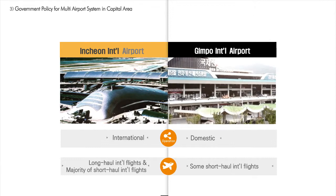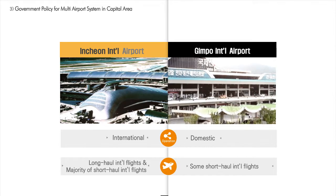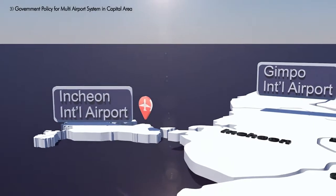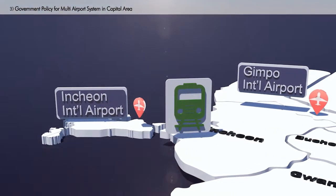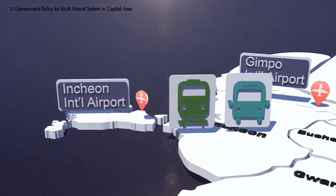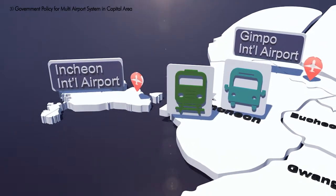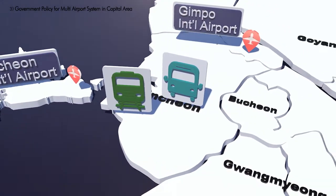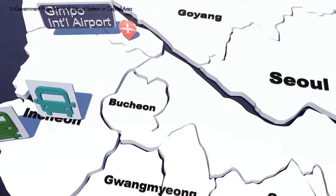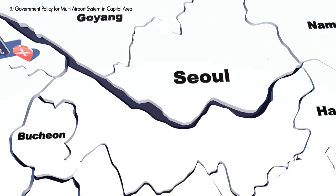Locating domestic and international flights in different airports may raise questions on connection from distant cities to international flights. However, the two airports are well-connected by rail, and with Korea having a relatively small territory and excellent ground transportation, travel times and distances from other cities to Incheon International Airport are reasonable. Both Incheon International Airport and Gimpo International Airport are located in close proximity to Seoul and within the Seoul metropolitan area. Gimpo International Airport is located closer to Seoul, but both airports are well-connected to the Seoul metropolitan area by both road and rail.